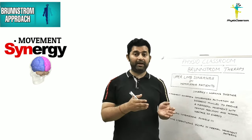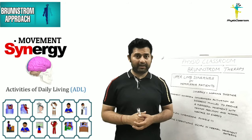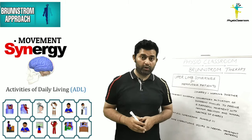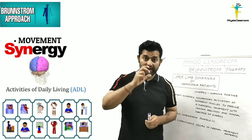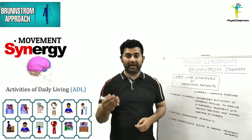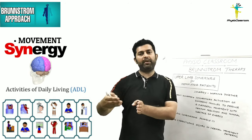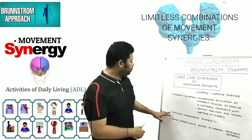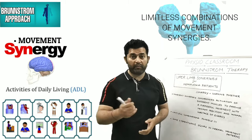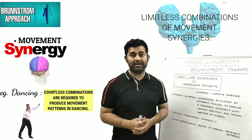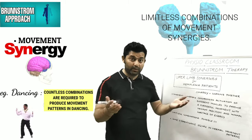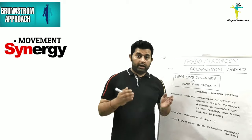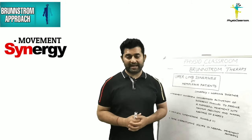A normal human brain has the ability to use different movement synergy patterns to carry out different types of work. The movement synergies required for brushing, eating, drinking, writing, painting, plumbing, and gardening all use different combinations of muscle activation. The normal human brain can use limitless combinations of movement synergies — dancing is one such characteristic example where a variety of movement synergies are used to assume different body postures.